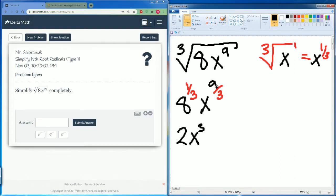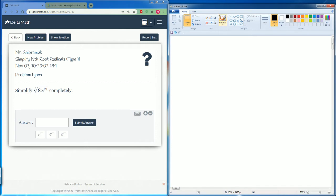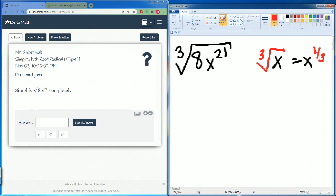Now we have the cube root of 8x to the 21. Again, if it's the cube root, the exponent here is to 1/3, so you divide by 3. So it's 8 to the 1/3 power, x to the 21 divided by 3.